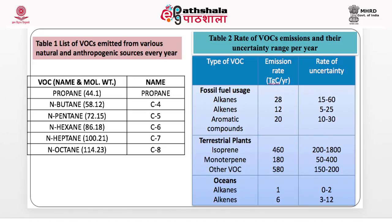Volatile organic compounds include seemingly simple compounds such as propane, butane, pentane, hexane, heptane, and octane. Looking at emission sources, fossil fuel usage gives alkanes, alkenes, and aromatic compounds at an emission rate of up to 28 TgC per year, with an uncertainty range of 15 to 60 TgC per year.